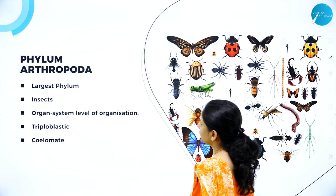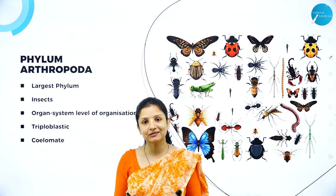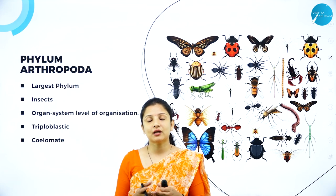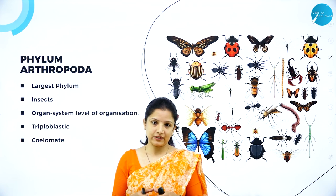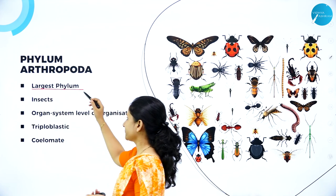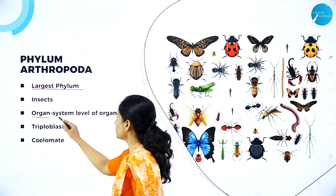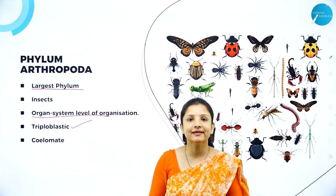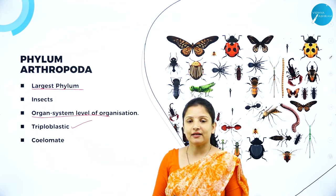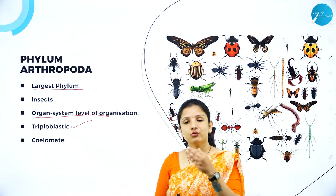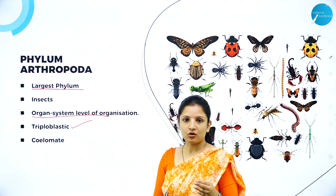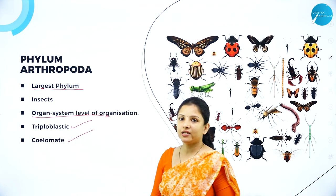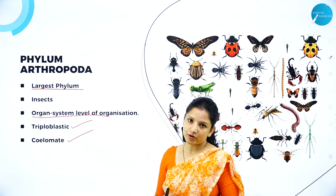Phylum Arthropoda is the largest phylum because all the insects come under it, and we know that insects are distributed throughout — there are millions of insects. They have organ system level of organization, wherein a group of organs come together to perform a particular function. Their cell arrangement is triploblastic, with cells arranged in three embryonic layers: outer ectoderm, inner endoderm, and a middle layer called mesoderm. They have a body cavity and are coelomates.